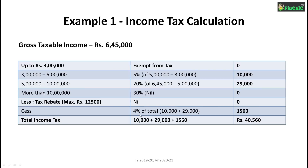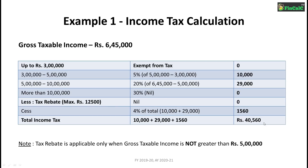A cess of 4% will be applicable, which makes it equal to Rs 1,560. So your total income tax becomes Rs 10,000 plus Rs 29,000 plus Rs 1,560, which equals Rs 40,560. For a gross taxable income of Rs 6,45,000, the income tax payable is Rs 40,560.